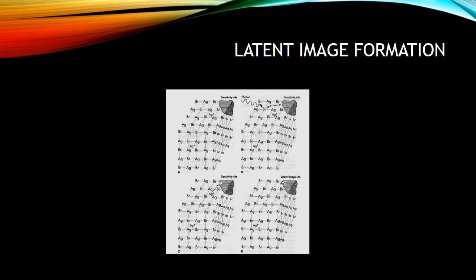Between taking the image and processing it, there is an important concept called latent image formation. Once the radiograph is taken, if you open the packet and look at the film you will not be able to see the image. You have to subject it to processing for the image to become visible. However, the image is still present — in this transitional phase, the data stored within the film is called a latent image.